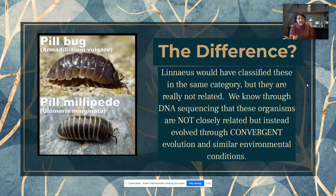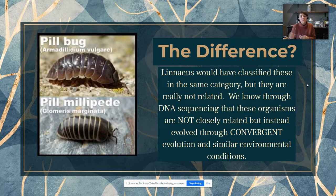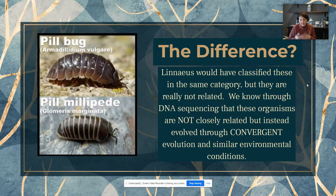They're not related. In fact, they have similar characteristics because of what we call convergent evolution, where they evolved those similar traits based on similar environmental conditions. In today's classification systems, these two groups would be placed much further apart than in Linnaeus' system. It's really important to bring DNA and evolution into our classification systems so that we do it correctly.